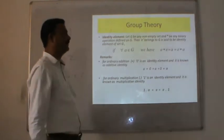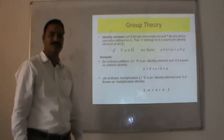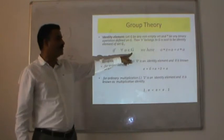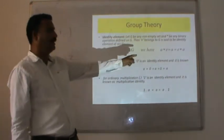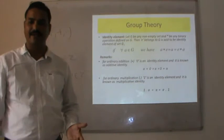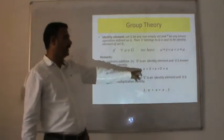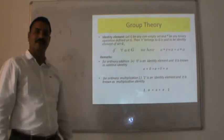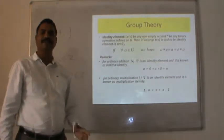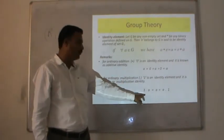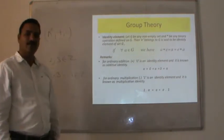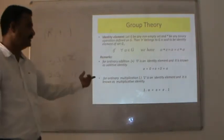Identity element: let G be any non-empty set and * be any binary operation defined on G. Then e belonging to G is said to be an identity element if for every a in G, a * e = a and e * a = a. For ordinary addition, 0 is the additive identity, since a + 0 = 0 + a = a. For ordinary multiplication, 1 is the identity element, since 1 · a = a · 1 = a.